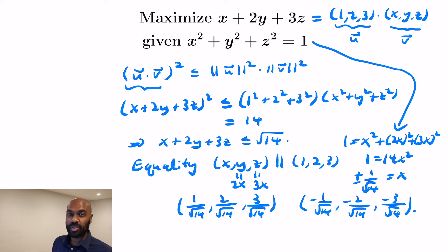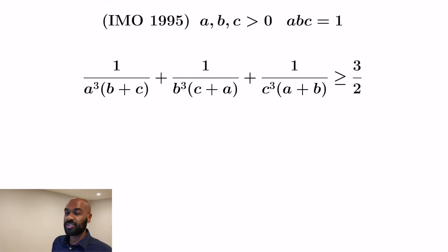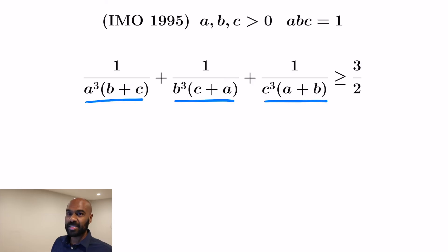Now let's use Cauchy-Schwarz to solve a problem from the 1995 International Math Olympiad. The problem states: given three positive real numbers A, B, C with product 1, prove that 1/(A³ + BC) + 1/(B³ + CA) + 1/(C³ + AB) ≥ 3/2. This problem will illustrate a method for applying Cauchy-Schwarz even when it doesn't look immediately applicable.